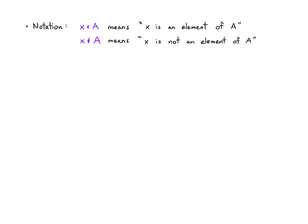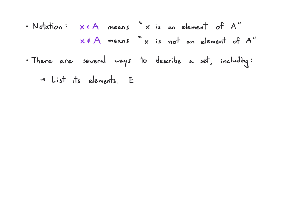There are many ways to describe a set. The simplest is to just list the elements — so maybe I write A = {3, 4, 5, ...} and we know that means 6, 7, 8, 9, going on to infinity.